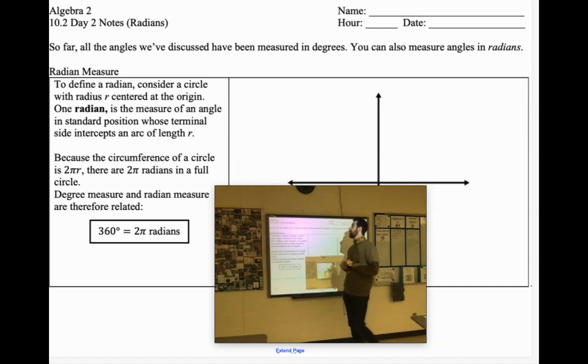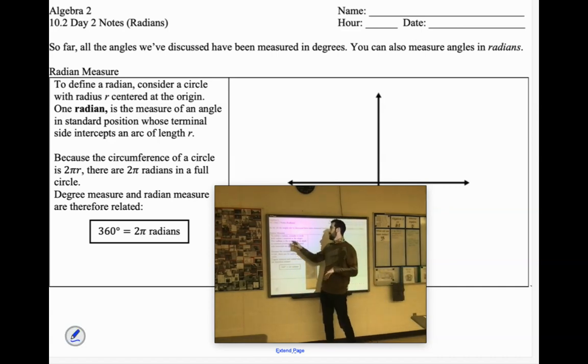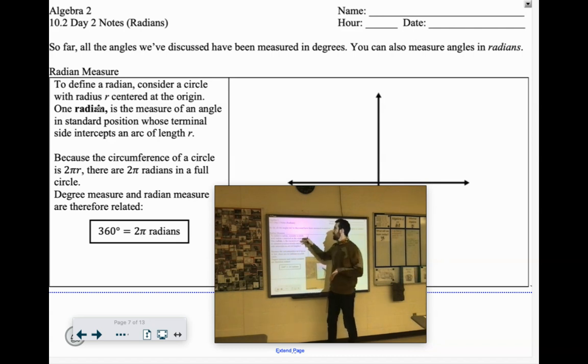So, to define a radian, consider a circle with a radius R centered at the origin. One radian is the measure of an angle in standard position whose terminal side intercepts an arc of length R.